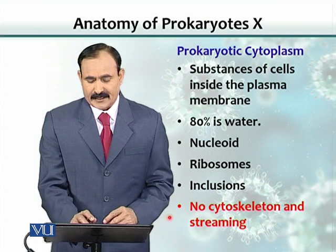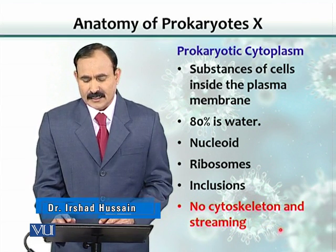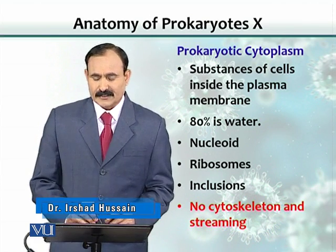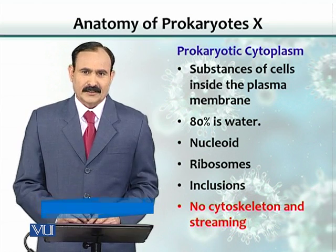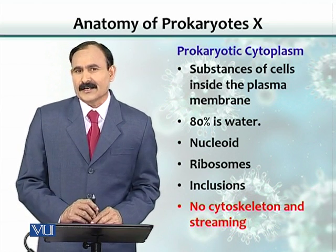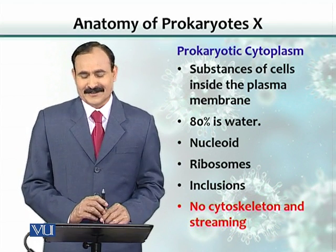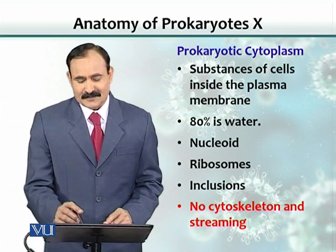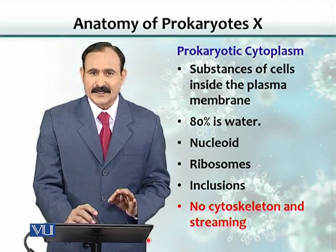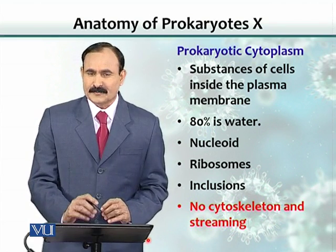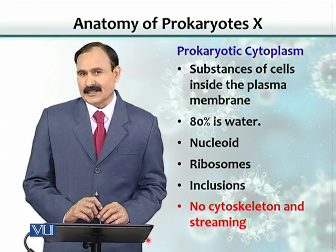Please remember that in prokaryotes, there is no cytoskeleton and there is no streaming. The cytoskeleton is present in eukaryotic cells. 'Cyto' means cell and 'skeleton' means skeleton. Basically, these are not bones — a cytoskeleton means there are fibers made up of very fine threads that support the cells and maintain their shape.